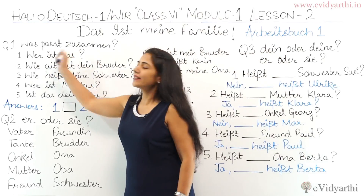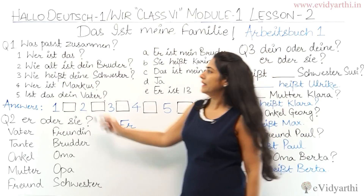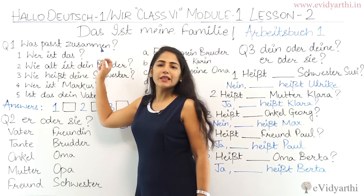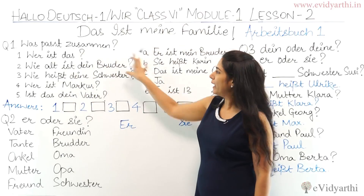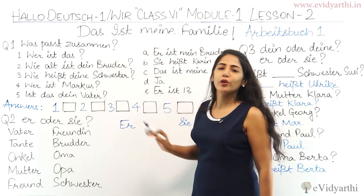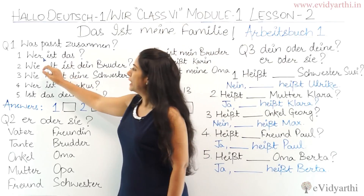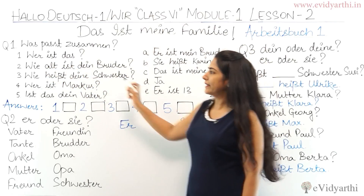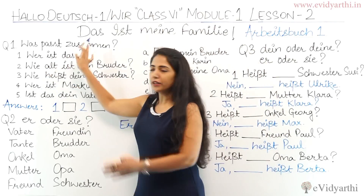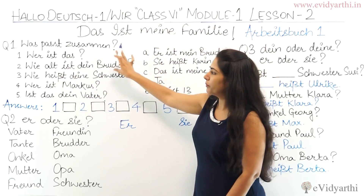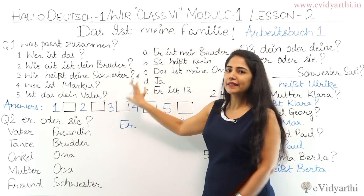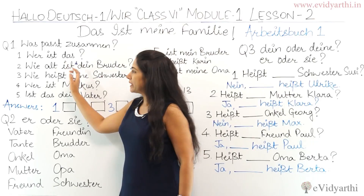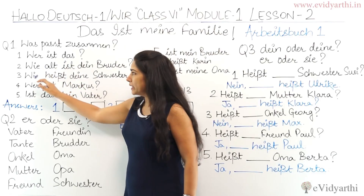The first exercise in your Arbeitsbuch is 'Was passt zusammen,' which means you have to match the following. First is 'Wer ist das,' which means 'Who is this?'